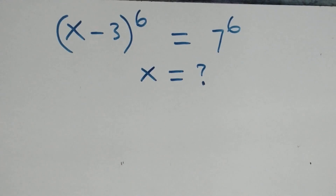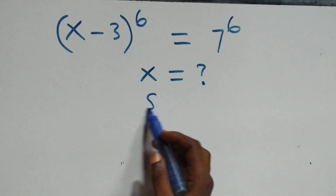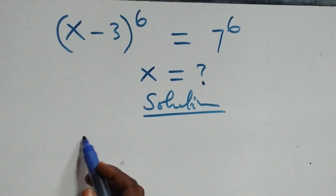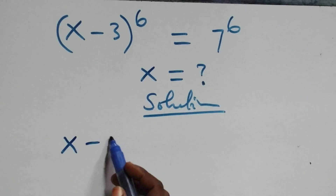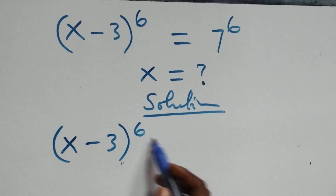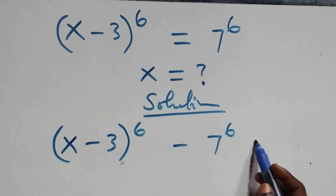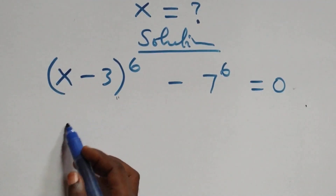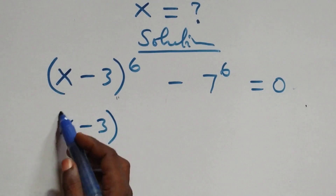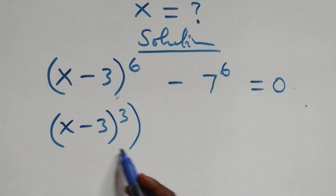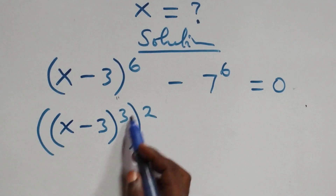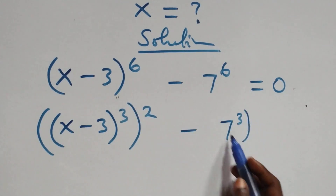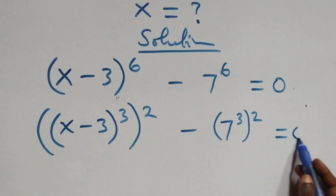Hello, you are welcome. How to solve this nice exponential equation. We take 7 raised to the power 6 to the left hand side and we have x minus 3, all raised to the power 6, minus 7 raised to the power 6, equals to 0. The next step, we can write this as x minus 3 all raised to power 3, then all raised to power 2, as 2 times 3 gives us 6, minus 7 raised to power 3, then all raised to power 2, equals to 0.